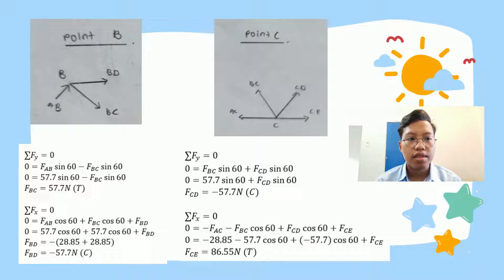Next is sum of FX. We use FX to get force BD. But force AB and force BC we must use because they have components in X and Y. We substitute into the equation. Zero equals force AB cos 60 plus force BC cos 60 plus force BD. Zero equals negative 57.7 cos 60 plus 57.7 cos 60 plus force BD. Force BD equals negative 28.85 plus 28.85, and we get negative 57.7 N compression.